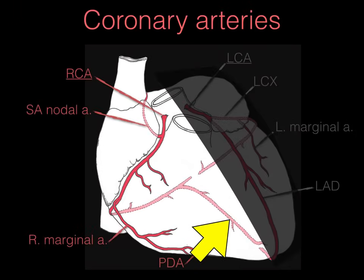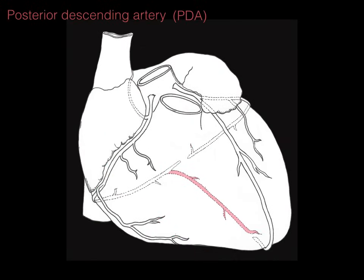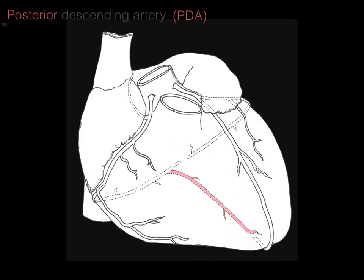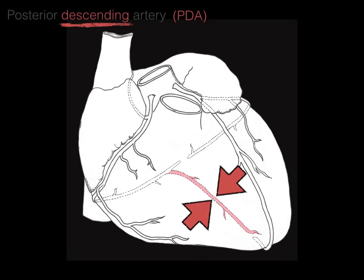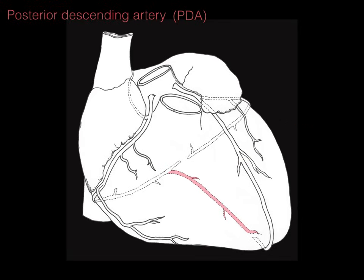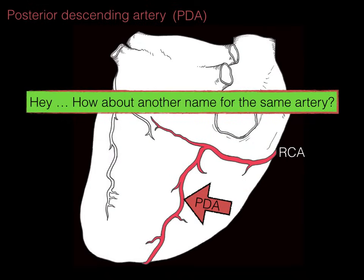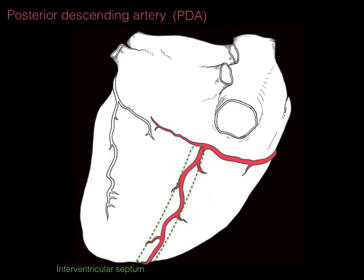The posterior descending artery, or PDA — P for posterior, D for descending, A for artery — is called posterior because it's found on the posterior surface of the heart, and descending because it descends along the back of the heart. Turning the heart around to see the back side, we see the right coronary artery giving rise to the posterior descending artery. Along this runs the interventricular septum — the myocardium between the left and right ventricles — so this artery is also called the posterior interventricular artery.